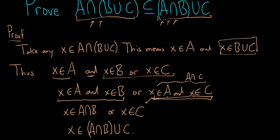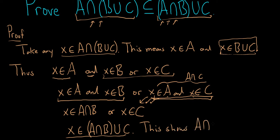So we started with an element in this set here and showed it is in this set here. This shows that A intersect B union C is contained in A intersect B union C, and that completes the proof. I hope this video has been helpful.